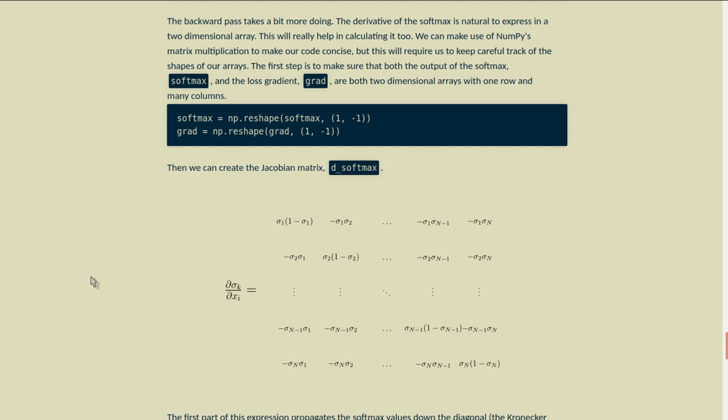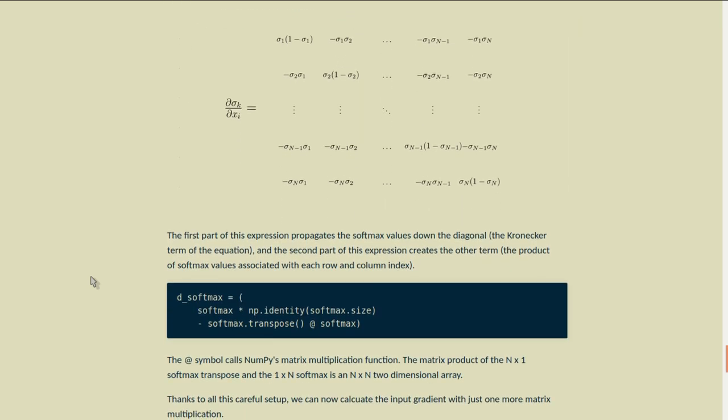Then we can create the Jacobian matrix, D sub softmax. The first part of this expression propagates the softmax values down the diagonal, the Kronecker delta term of the equation, and the second part of this expression creates the other term, the product of softmax values associated with each row and column index. D sub softmax equals softmax times the identity of softmax size minus the transpose of the softmax, matrix multiplied by the softmax itself. The at symbol calls numpy's matrix multiplication function. The matrix product of the n by 1 softmax transpose and the 1 by n softmax is an n by n two-dimensional array.